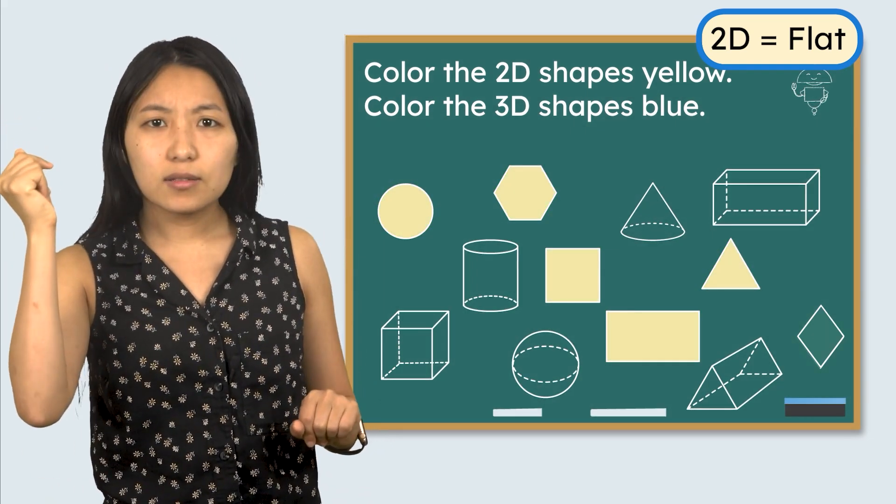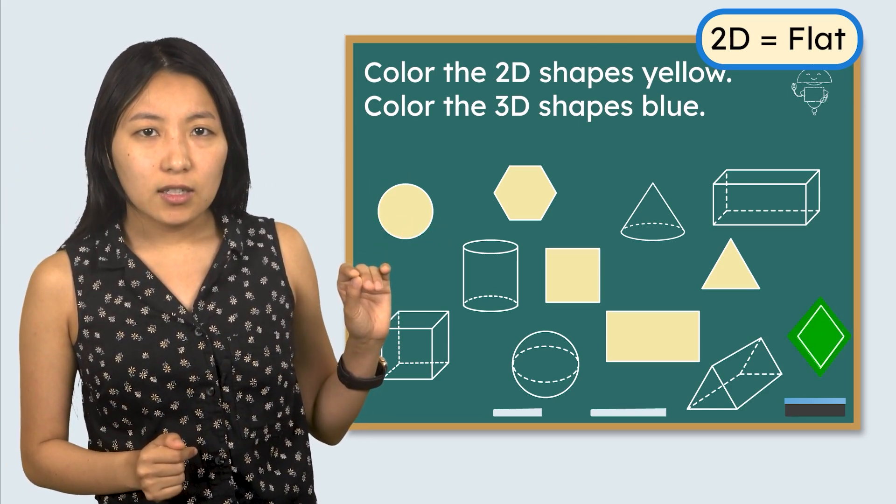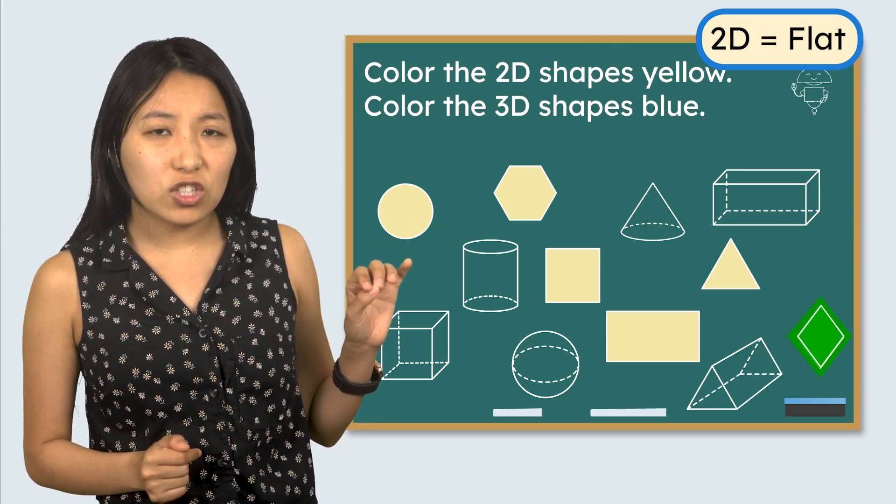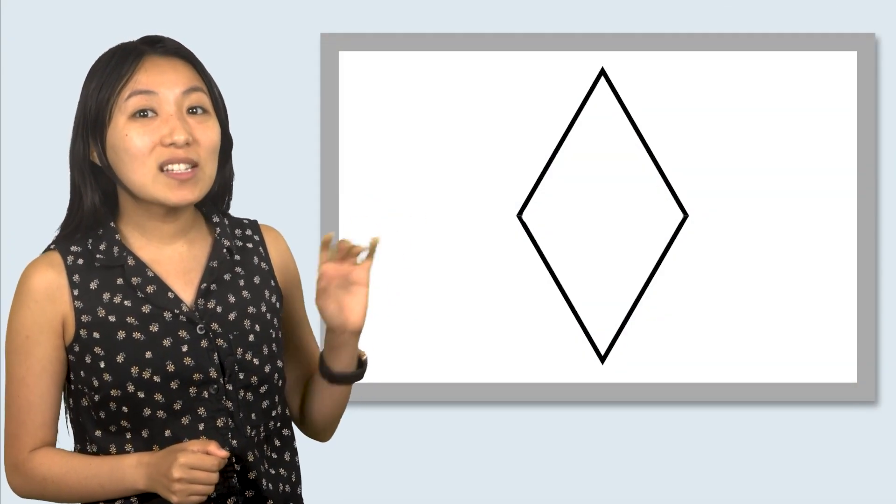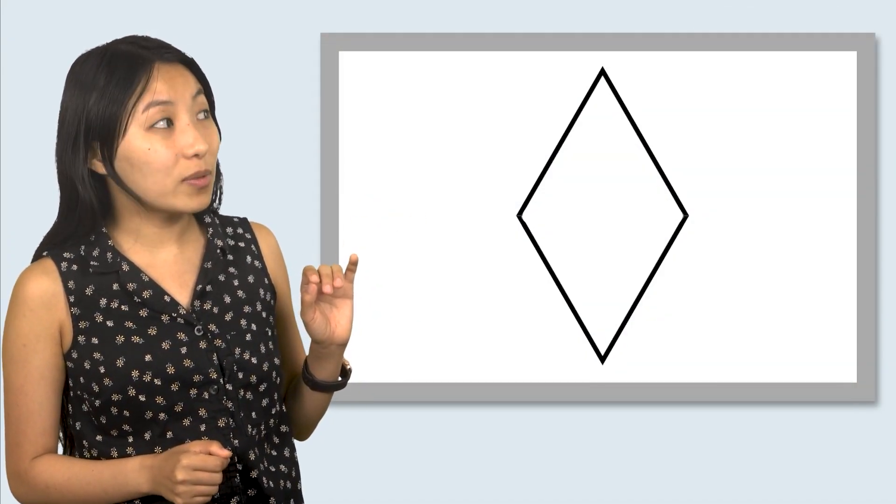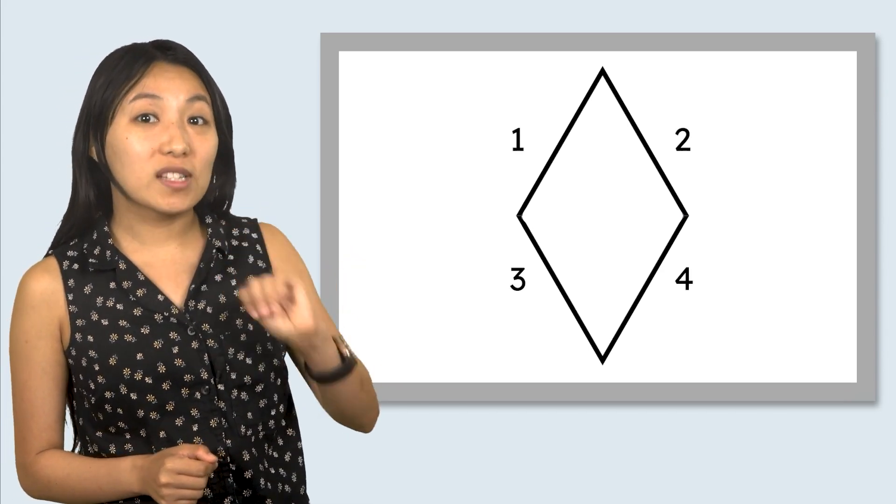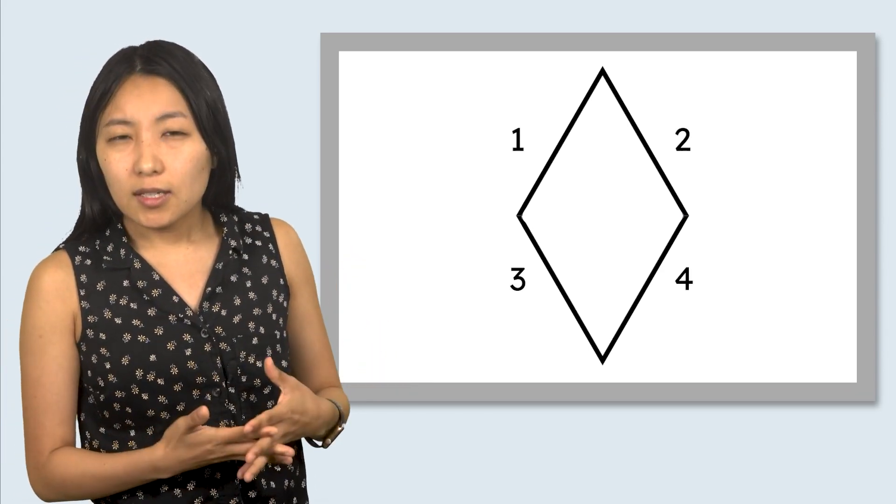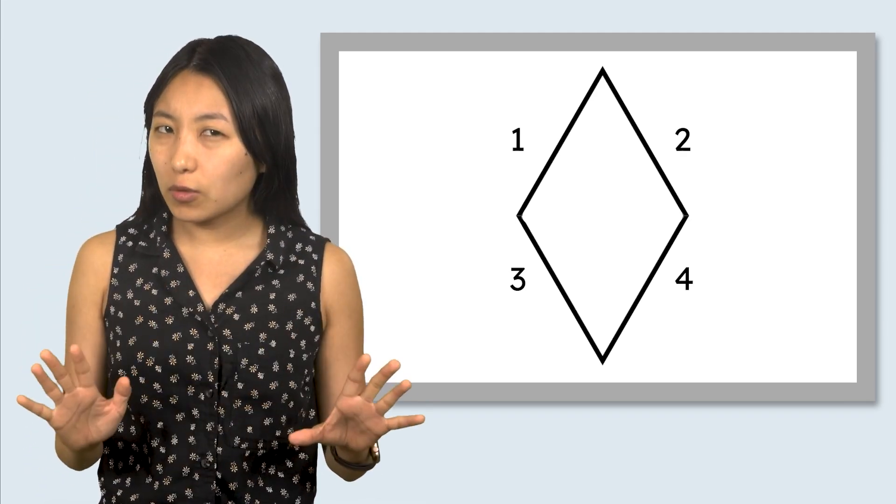Wait a second. I know this is a 2D shape because it's flat but I don't know which 2D shape it is. Let's take a closer look. How many sides do you count on this shape? Yes, this shape has four sides and they're all the same length. Can you think of another shape that has four sides that are all equal lengths?